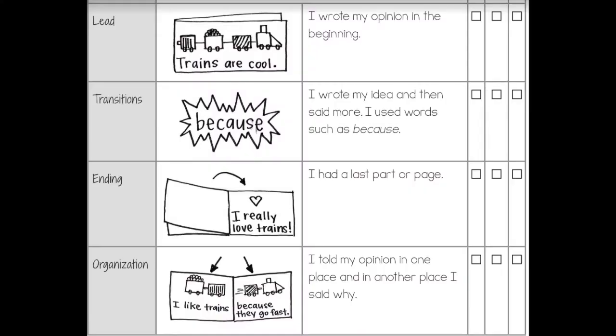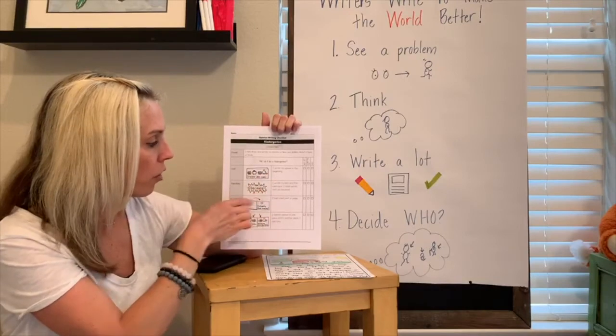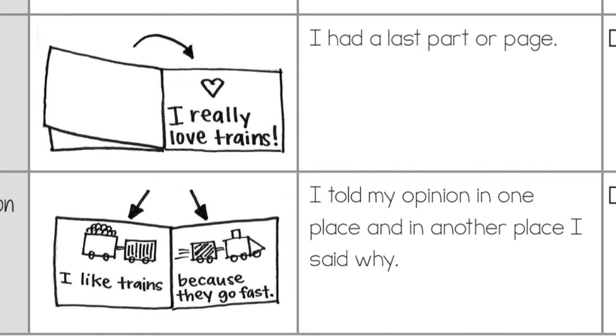Did you write your opinion in the beginning? Did you write an idea? Did you say more and use words such as 'because,' or did you have a last part of your page? We have that beginning, we have our middle, we have our ending. Did you tell your opinion in one place and in another place, and did you say why?